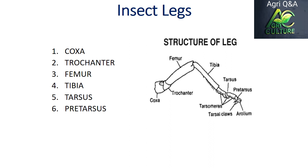Hello everyone, welcome to Agri Question and Answers. Today my topic is about modification of insect legs. Before that we will see the structure of insect legs. Insect legs are typically six-segmented. The first segment is the coxa — it is the proximal part and freely movable. It is connected to the trochanter, which is the second segment.